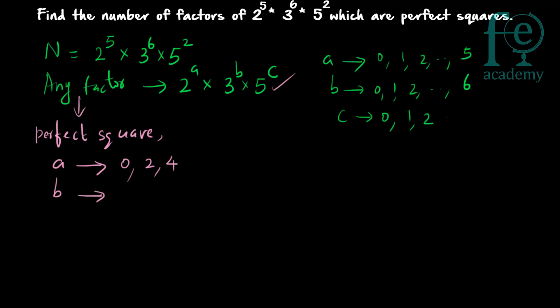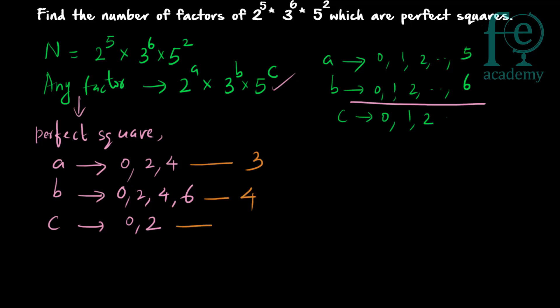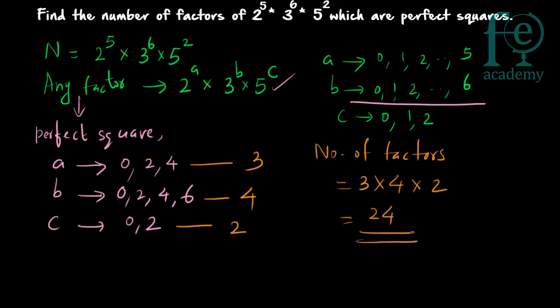For b, the valid values are 0, 2, 4, and 6 — the even numbers from 0 to 6. And c can take values 0 or 2. To find the number of factors, we multiply the number of choices: there are 3 possible values for a, 4 possible values for b, and 2 possible values for c. So the number of factors which are perfect squares equals 3 into 4 into 2, which is 24.